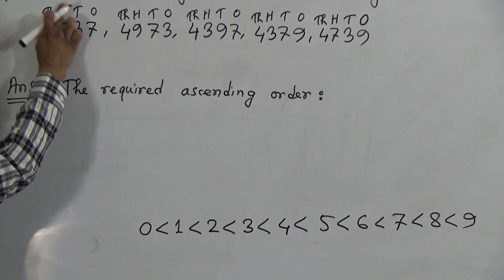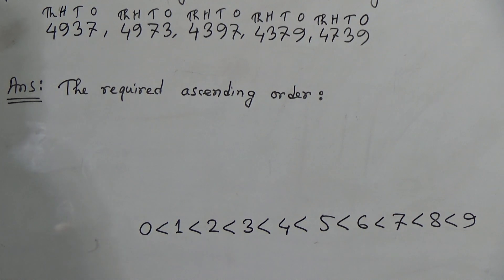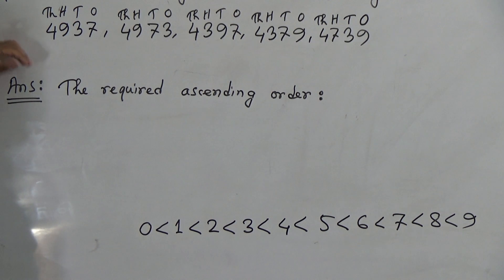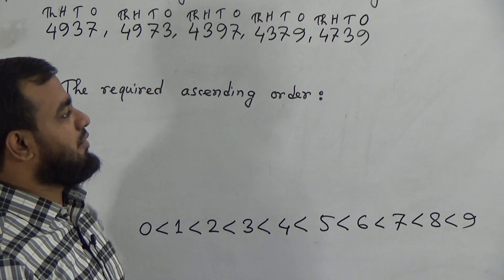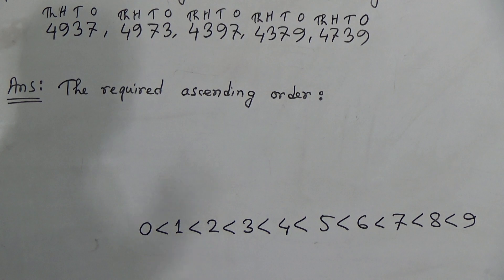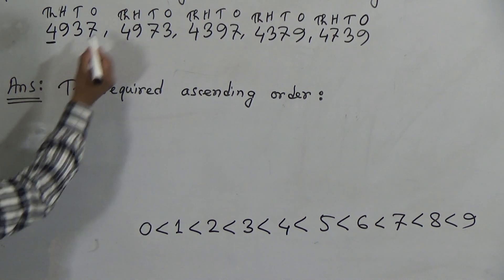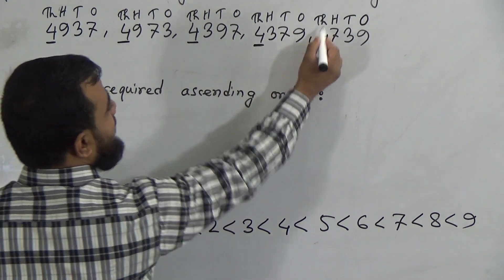Now look — it is very easy to arrange in ascending order, that means from smaller to greater. We will look at only the highest place value's position. All the numbers have the highest place value of 1000. Now, which digit is greater in this highest place? The 1000's place has 4 for all five numbers. That means all the highest place values are the same, so we cannot identify the smallest number here.